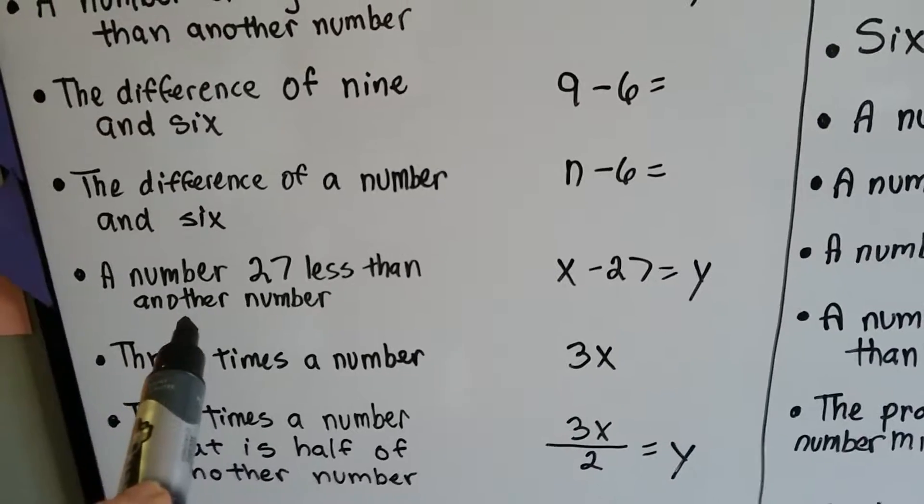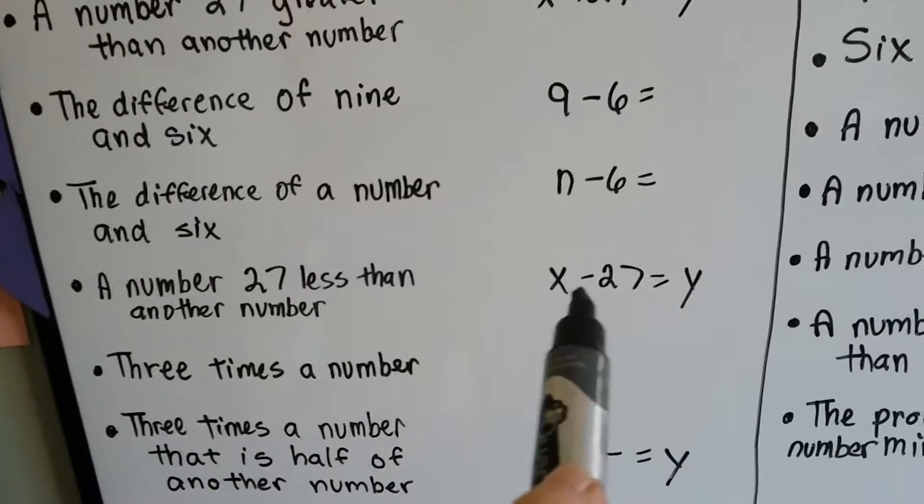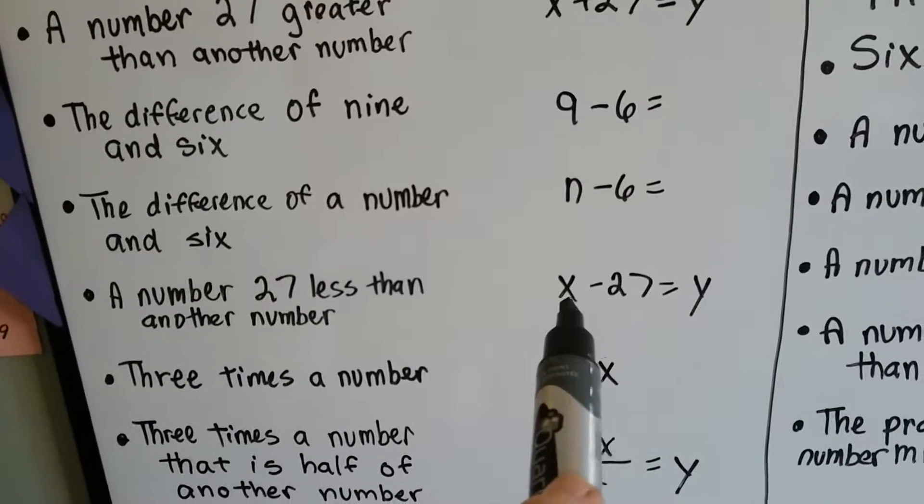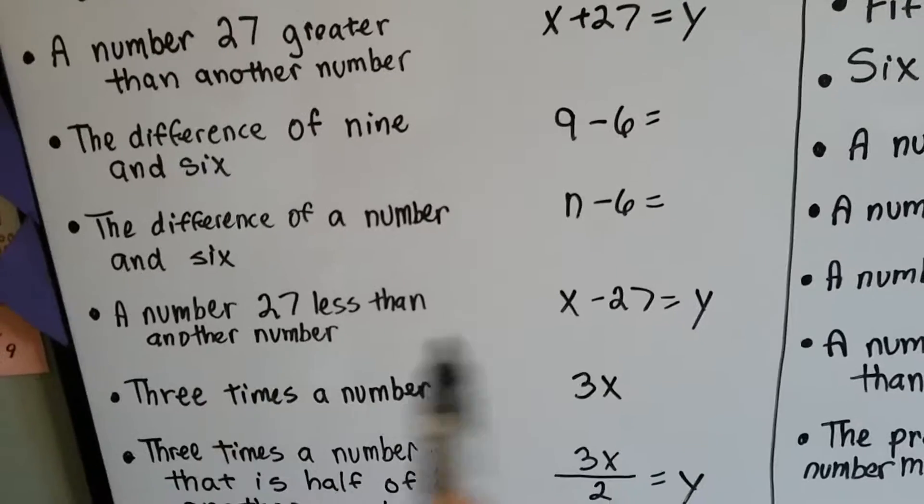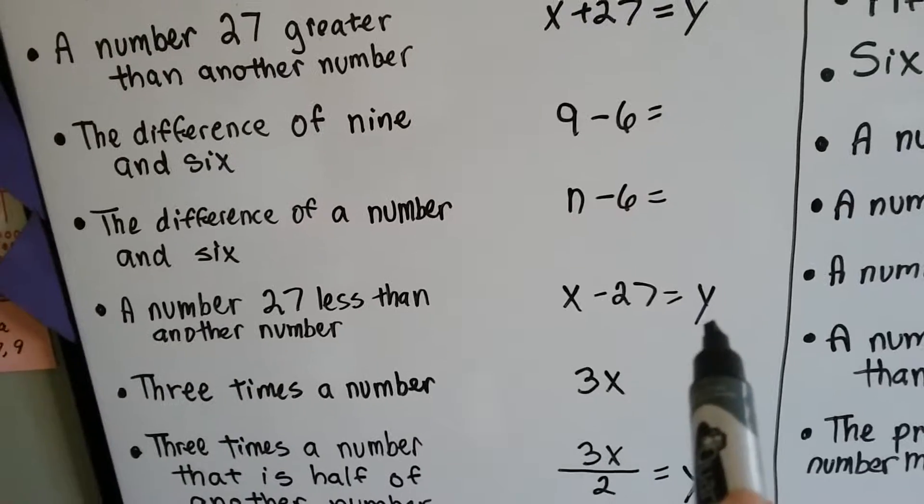A number 27 less than another number. So we've got a number x that is 27 less, so we're going to take away 27. It says another number, so we need a different variable, so we'll use y.